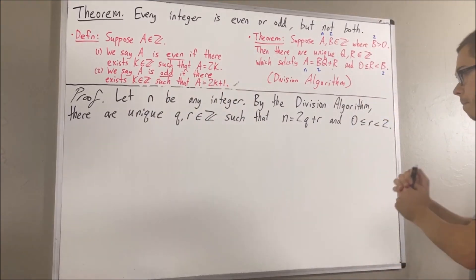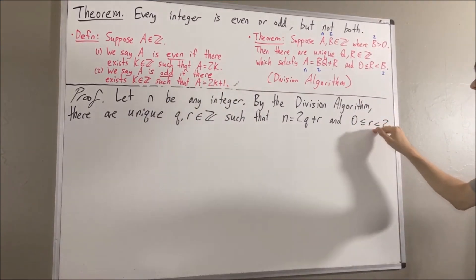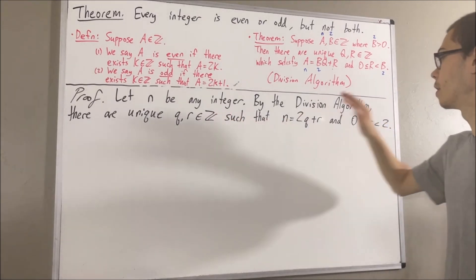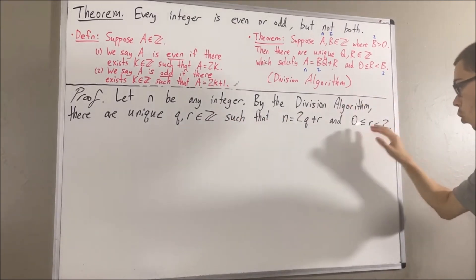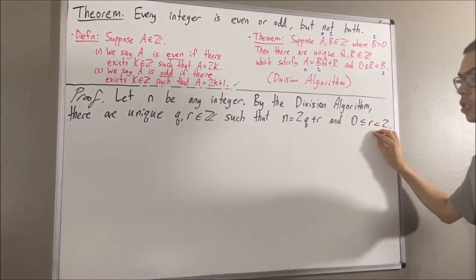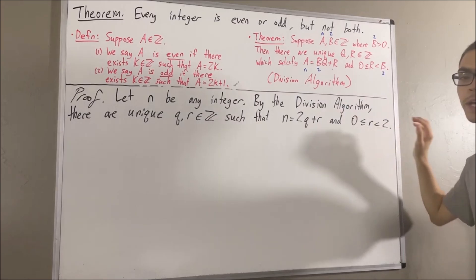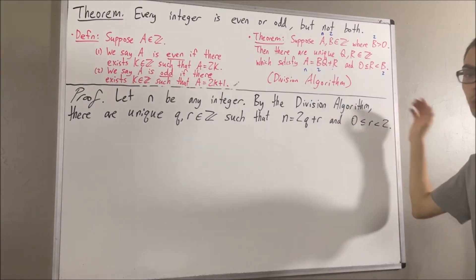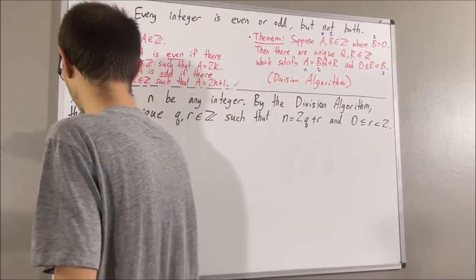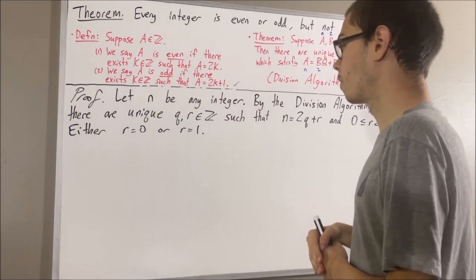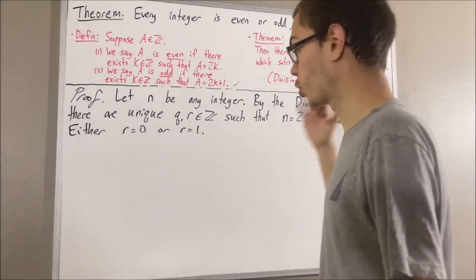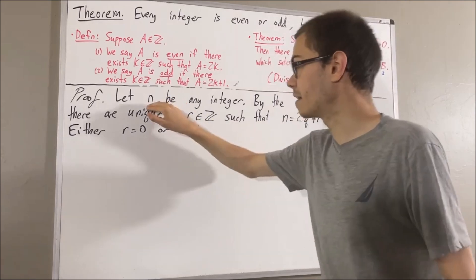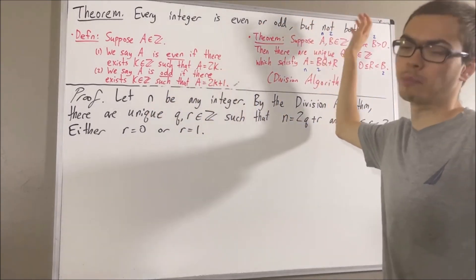Since 0 is less than or equal to r is less than 2, and r is an integer, we know that the only integers that satisfy this inequality are 0 and 1. So either r is equal to 0 or r is equal to 1. We're going to prove that in either case, n is even or odd, but not both.